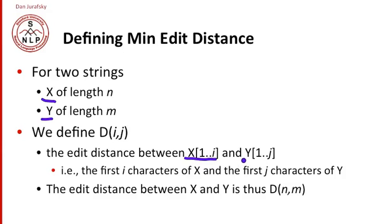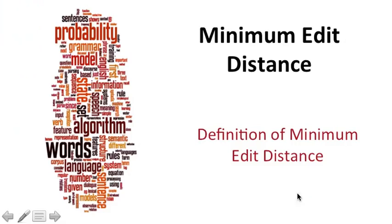And the first j characters, one through j, of string Y. So that's what's defined by D of i, j. And so the distance between the entire two strings is going to be D of n comma m, because the strings are of length n and m. So that's our definition of minimum edit distance.